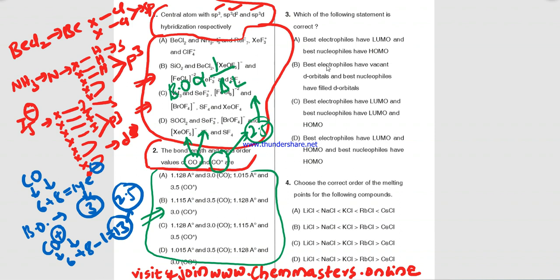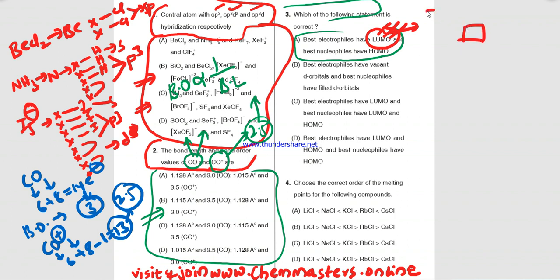The third question asks which statement is correct: the best electrophiles have LUMO and the best nucleophiles have HOMO. LUMO stands for Lowest Unoccupied Molecular Orbital — when an electrophile has a LUMO it is ready to gain electrons, making it the best electrophile. HOMO stands for Highest Occupied Molecular Orbital — when a nucleophile is electron-rich with a HOMO, it is the best nucleophile. So option A is the correct answer.